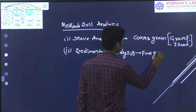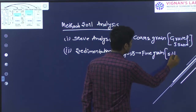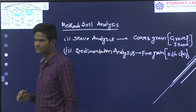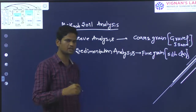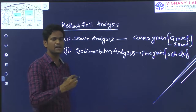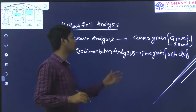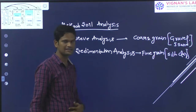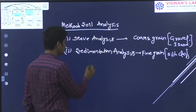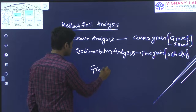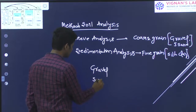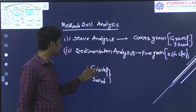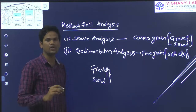Sedimentation analysis is useful for fine-grained soils — those are silt and clay. For analysis of clay and silt particles, we use sedimentation analysis. After sedimentation analysis, we also have Atterberg limits, based on which we can determine the characteristics and properties of fine-grained soils such as clay and silty soils. For gravel and sandy size soils we use particle size distribution.